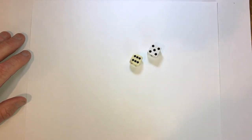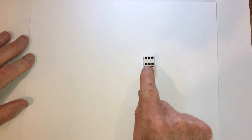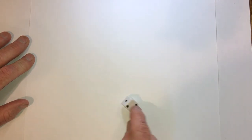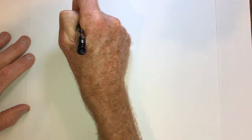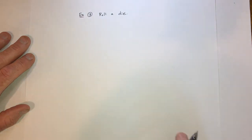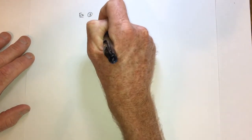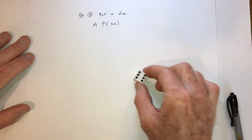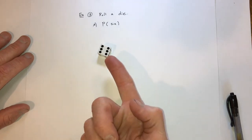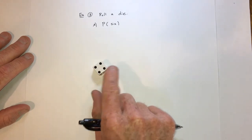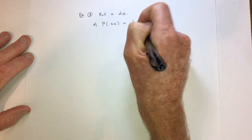For example three, suppose you have a die — when you have two of them, that's dice; one of them is a die. This is a regular six-sided die for playing games like Yahtzee. For part A, what's the probability that you roll a six? There's only one side with a six, and six sides total, so the probability is one out of six.